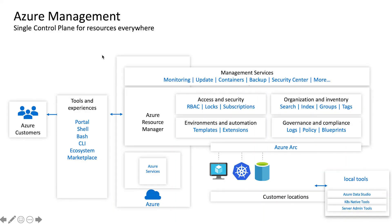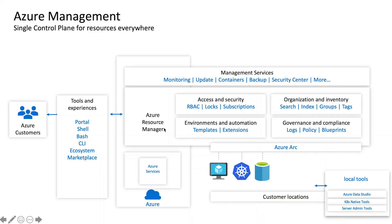When you look at this graphic, from the left you have customers — yourself or me — and we have different methods to access Azure: the portal, shell, bash, command line, and many different tools. Then on the right we have the Azure Resource Manager, which is really the coordinator of everything happening in Azure. It is the manager between the resource provider — which could be VM, storage, PaaS services — and controls who has access, where it runs, where it's located, and so on.